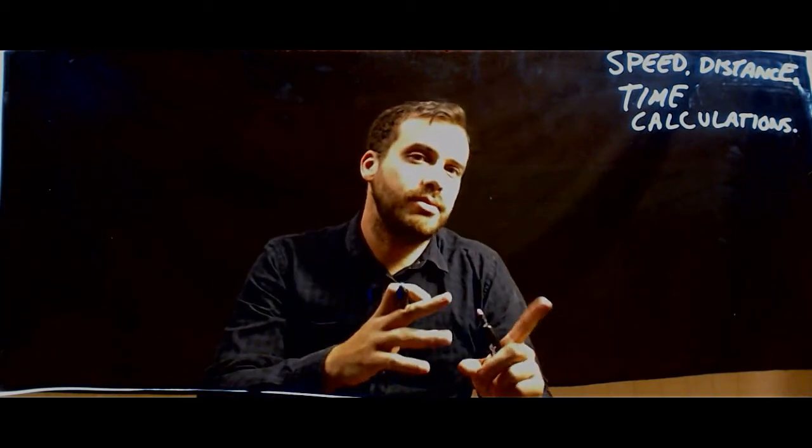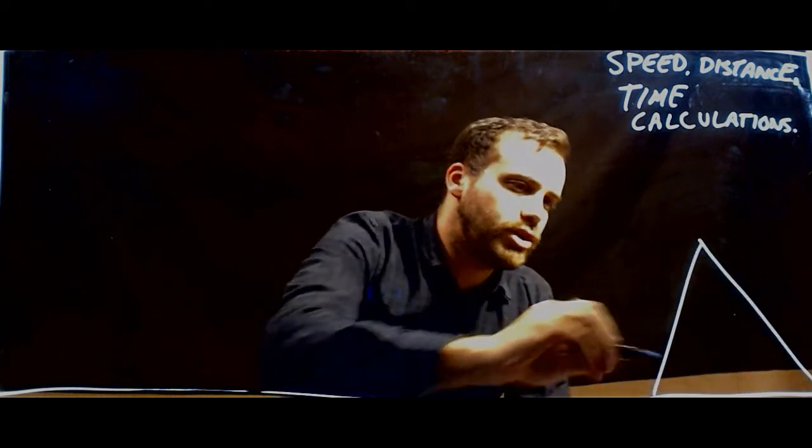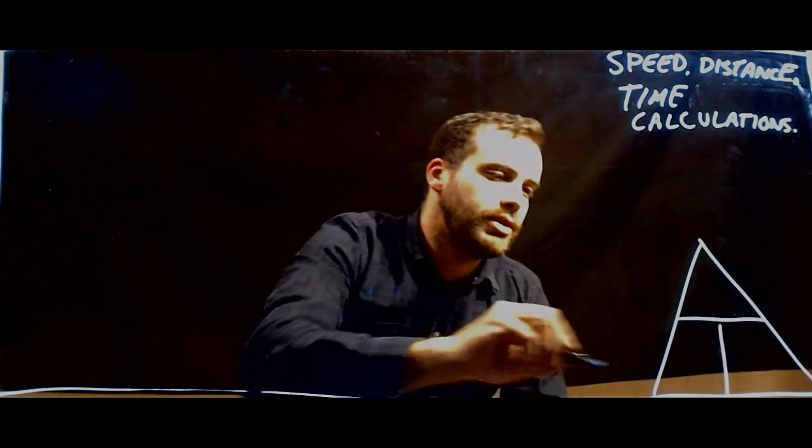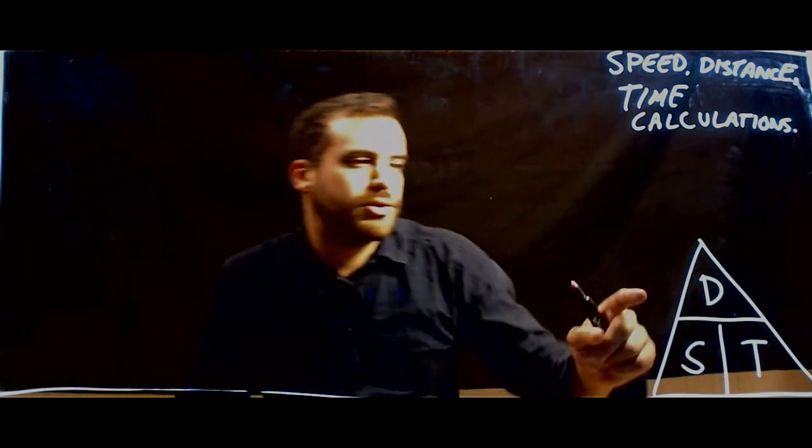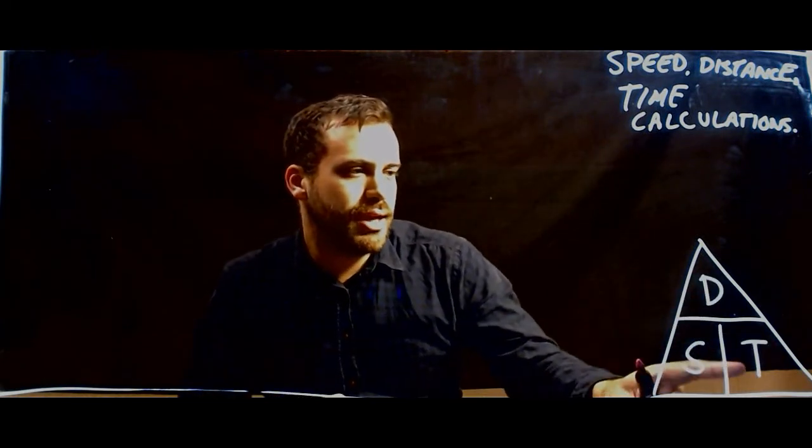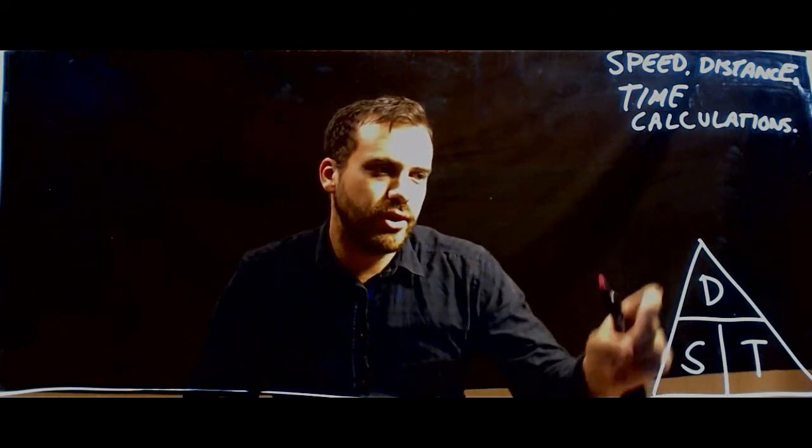Now, last time we did speed distance time calculations, you learnt about this handy triangle and we use it quite a bit. So speed, distance and time. So if you know two of those things, you can find the other one.